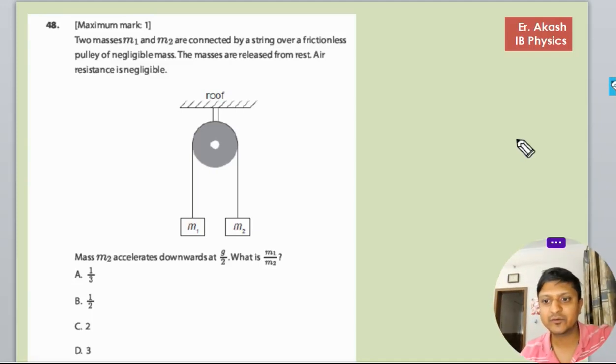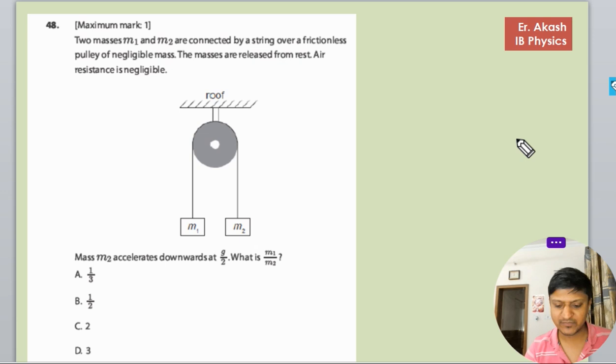There's a question that says two masses M1 and M2 are connected by a string over a frictionless pulley of negligible mass. The masses are released from rest and air resistance is negligible. The mass M2 accelerates downwards at g/2, so the acceleration given is g/2 for mass M2.